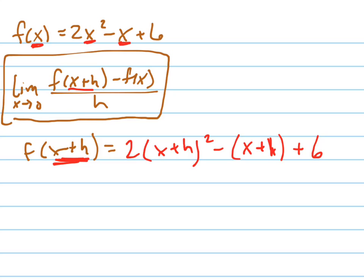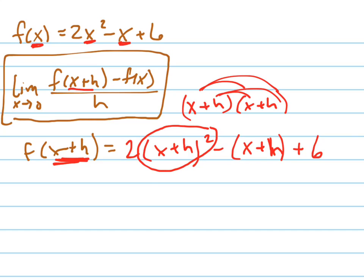Now to simplify this, that's an h right there, I have to make sure I don't distribute that squared in because that's not how it works. x plus h squared means x plus h times x plus h. So that's the mistake most people make. So when I foil this out,